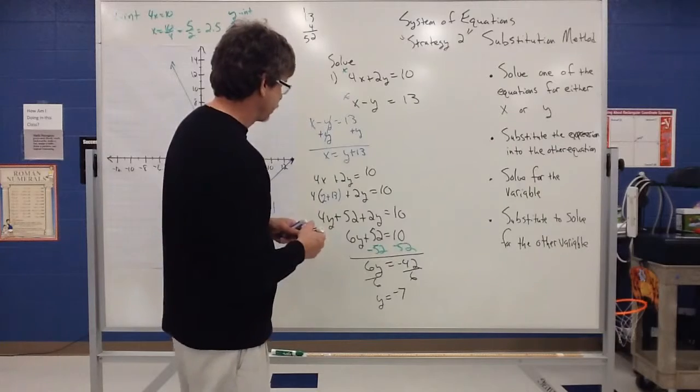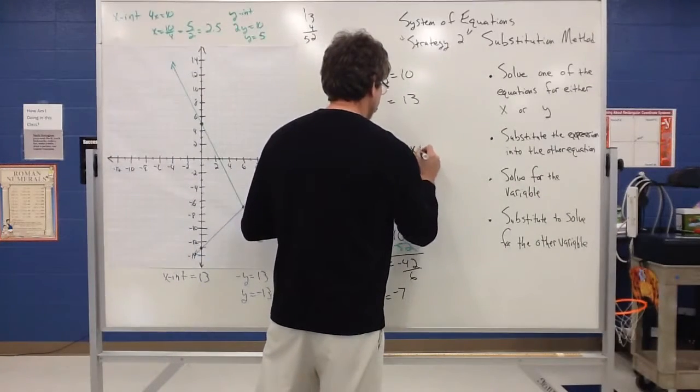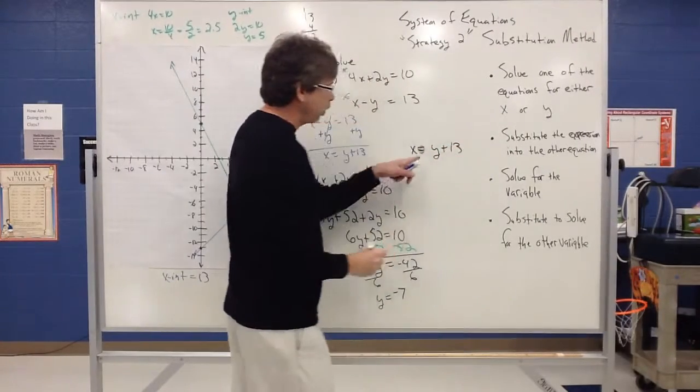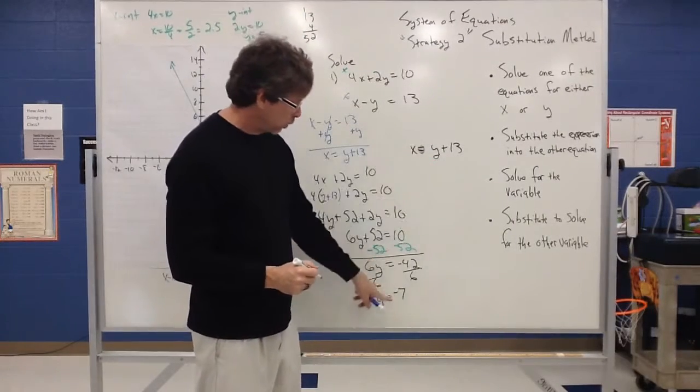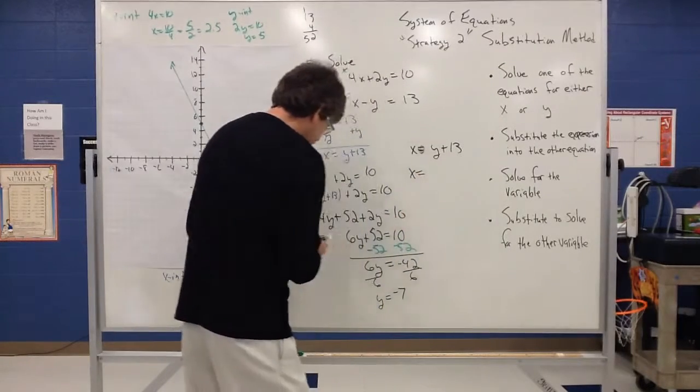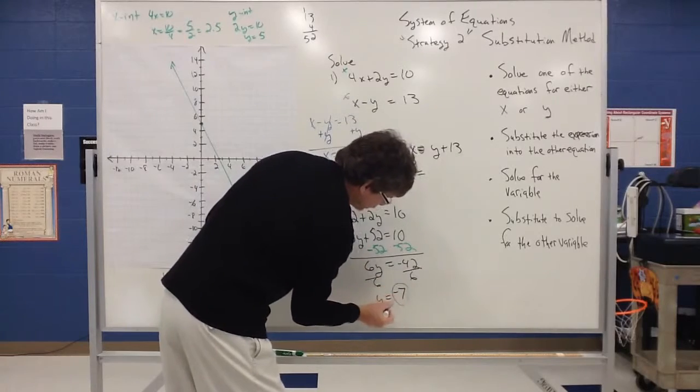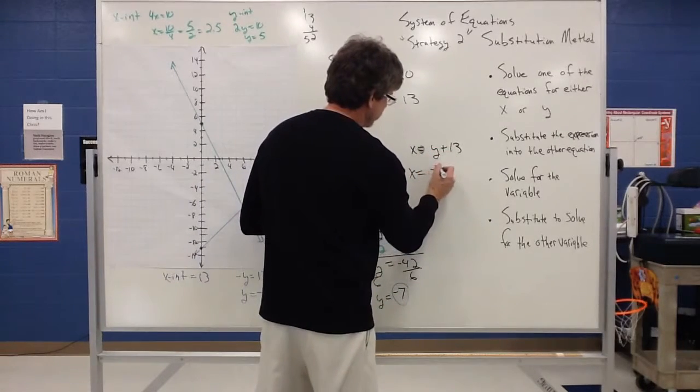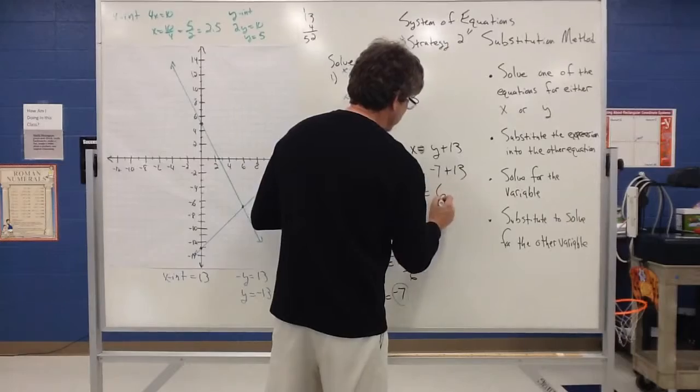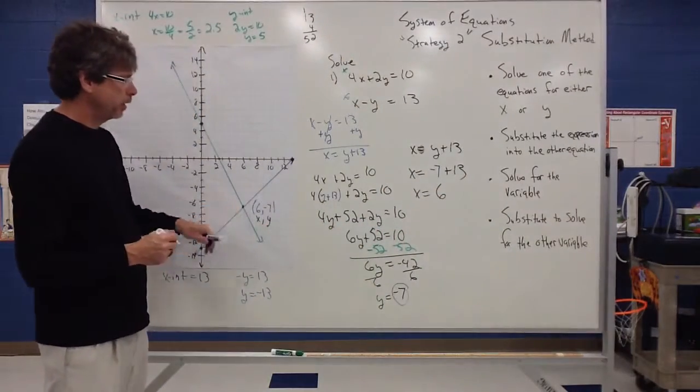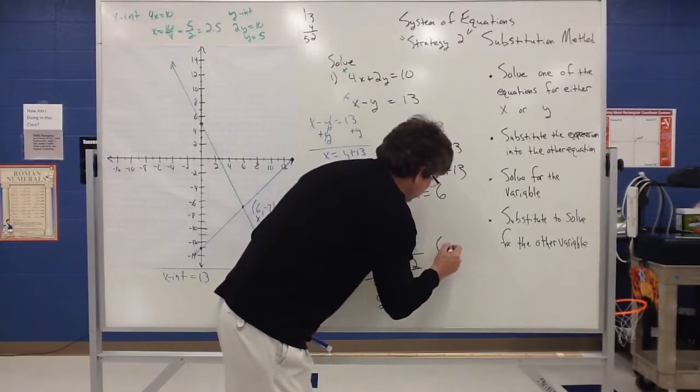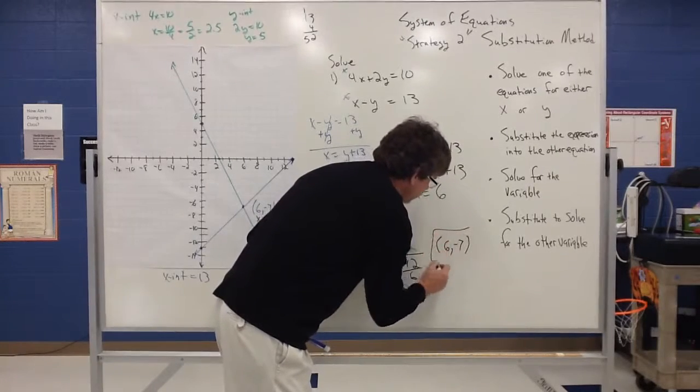So notice how x equals y plus 13. Since I know what y is now, I can replace this y with what I said y is equal to. And I can write down x is equal to then, I can replace this here for y. So I can change that to a negative 7 and I'm adding that to a 13. Therefore x is going to equal a positive 6. And that plays out with what we have over here. So the ordered pair can also be found by using algebraic strategies. So 6, negative 7 would be our solution.